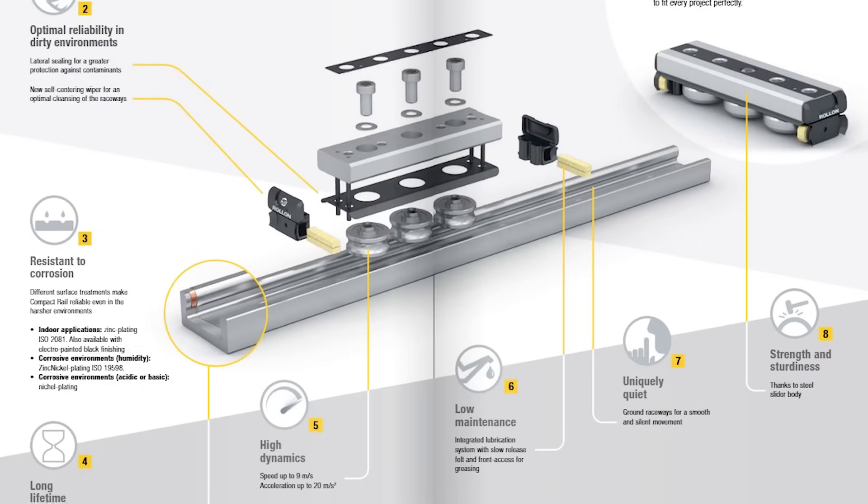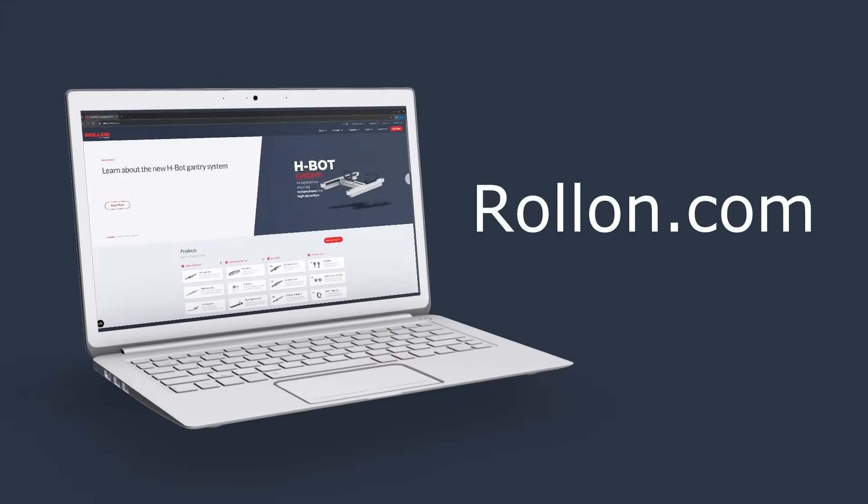With all these options available, where can someone go to learn more about what guide is going to be best for their application environment? For more information on these guides and the applications they are suited for, you can visit our website and product catalogs. If contamination is expected in an application, we recommend reaching out to a ROLLON engineer to ensure the best configuration is selected. For more information or to get in touch with a ROLLON engineer, please visit rollon.com. Thanks for watching.